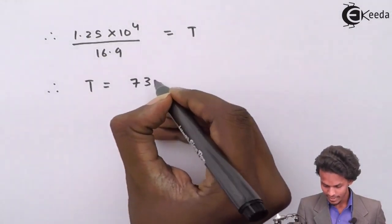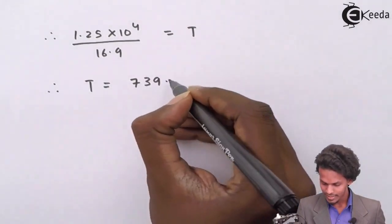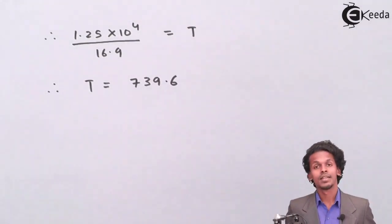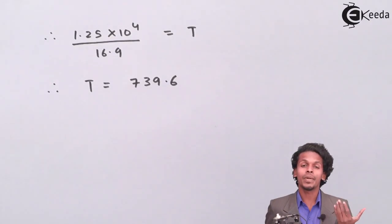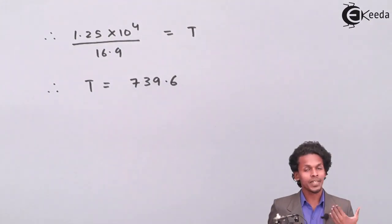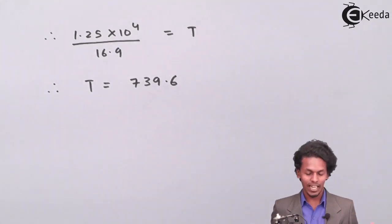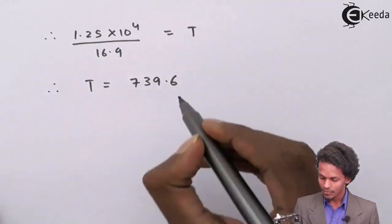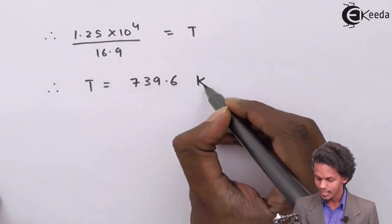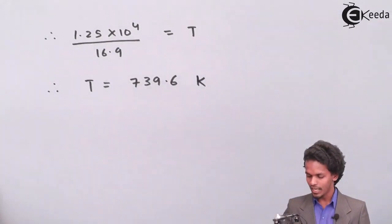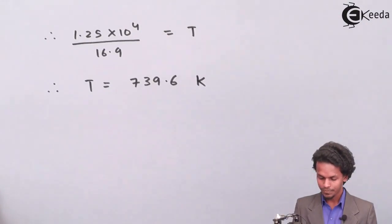The value of T works out to 739.6 K. We represent temperature in Kelvin, so this is the final answer.